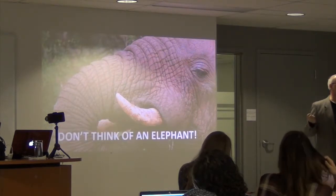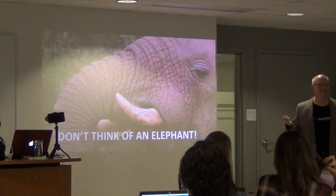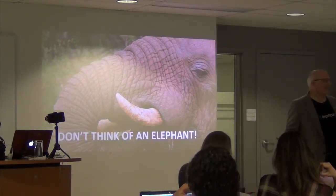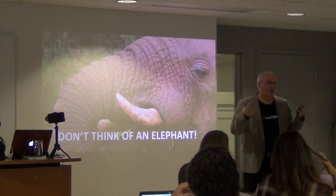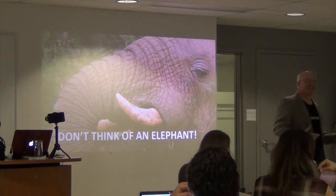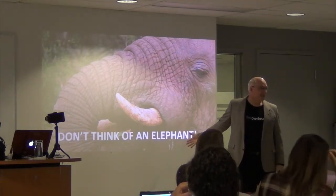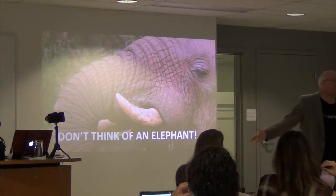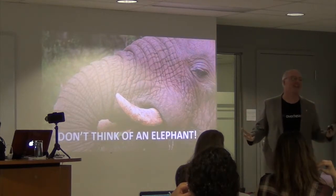What are you thinking of? An elephant. You're thinking of an elephant. If you're not thinking of an elephant, you're thinking 'I've got to think of something that's not an elephant — oh no, I'm thinking of an elephant.' If I tell you don't think of an elephant, the only thing you can think of is an elephant. That's all — we're wired that way, it's a natural tendency.